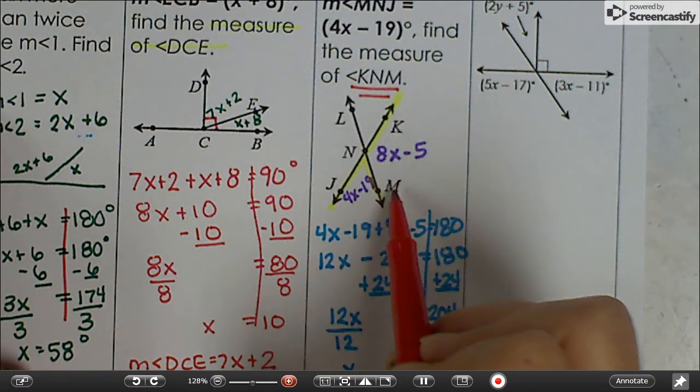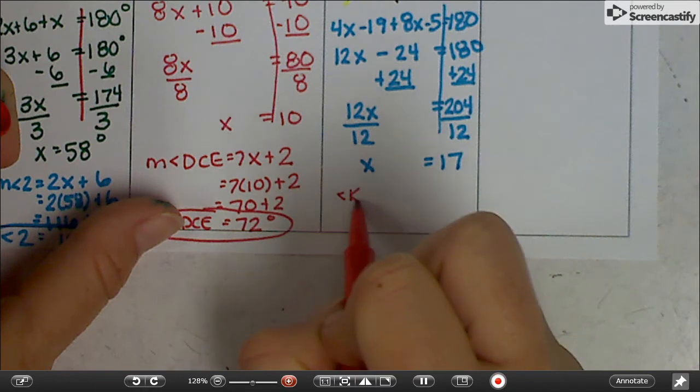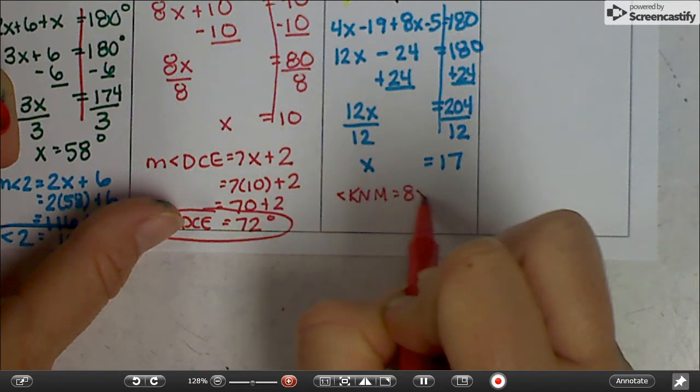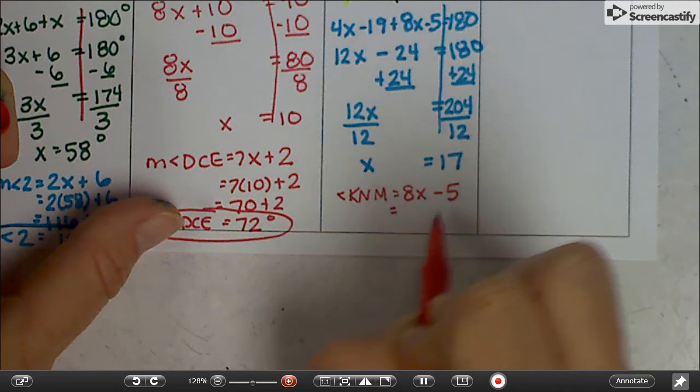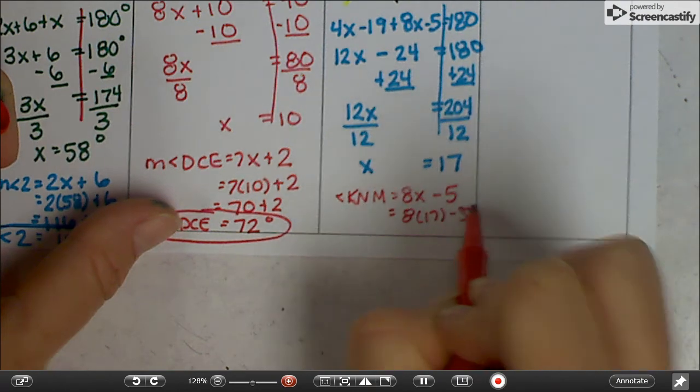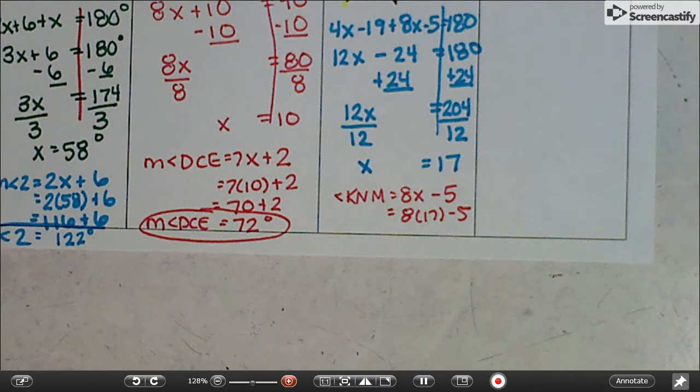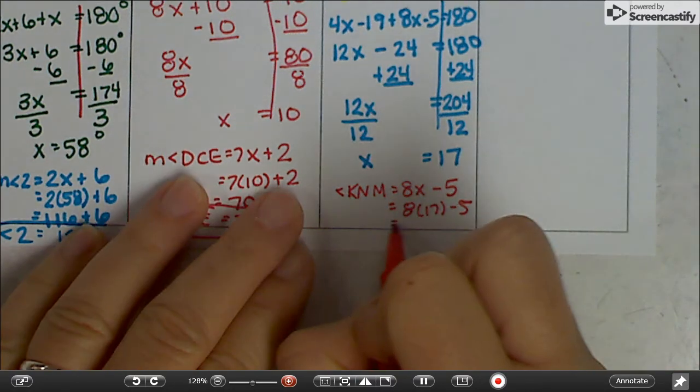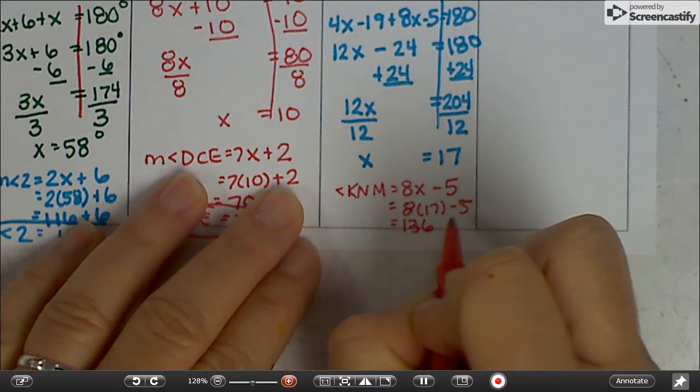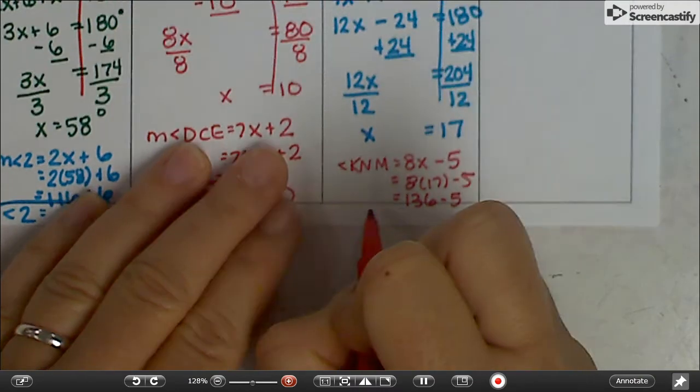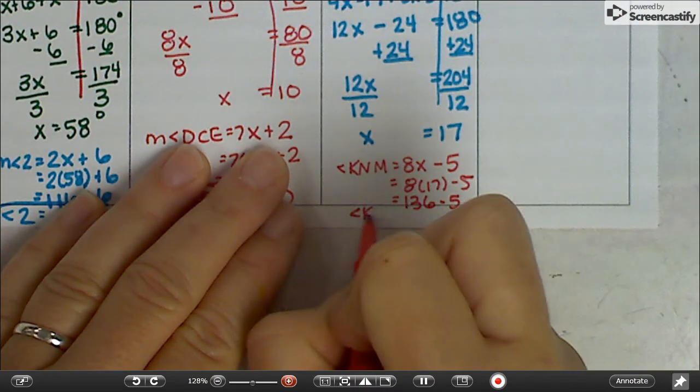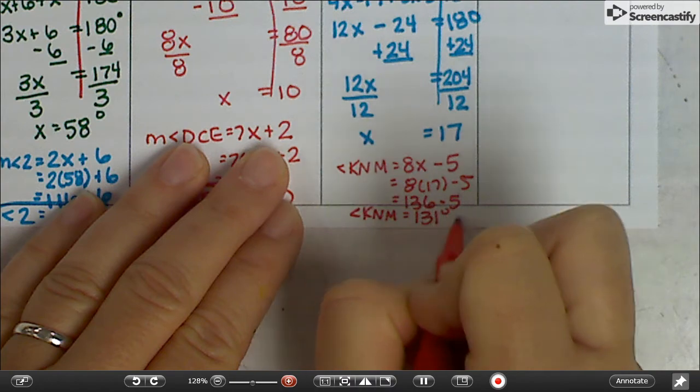KNM is 8x minus 5. We'll plug 17 in for x. That's 136 minus 5, so angle KNM equals 131 degrees.